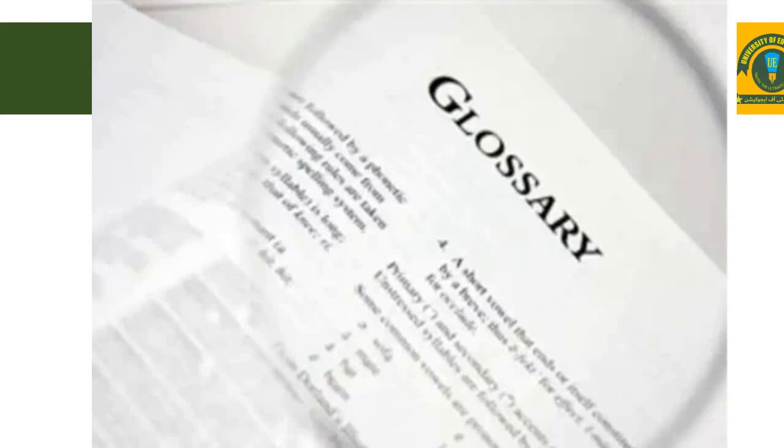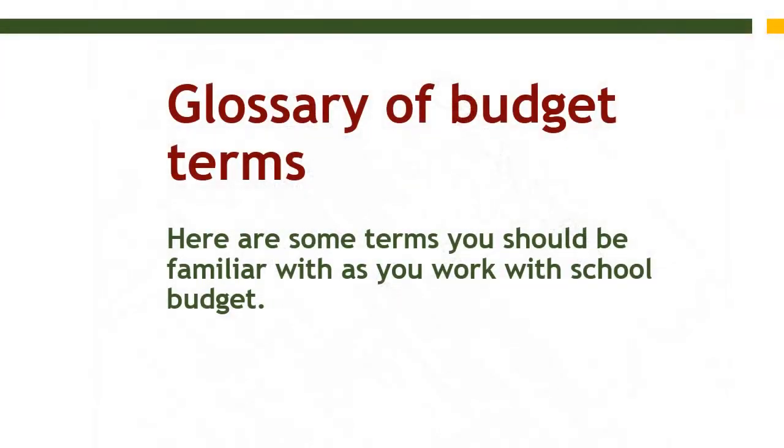There is a glossary — glossary means all the difficult terms used in the context of economics of education, and those terms will be explained. Under this topic, four or five items relevant to this chapter on Budgeting in Pakistan have been listed, whereas a detailed handout has been developed on the glossary which includes all the important terms used in this course on educational economics. That will be shared in the upcoming lectures. Here are some glossary of budget terms you should be familiar with as you work with the school budget.